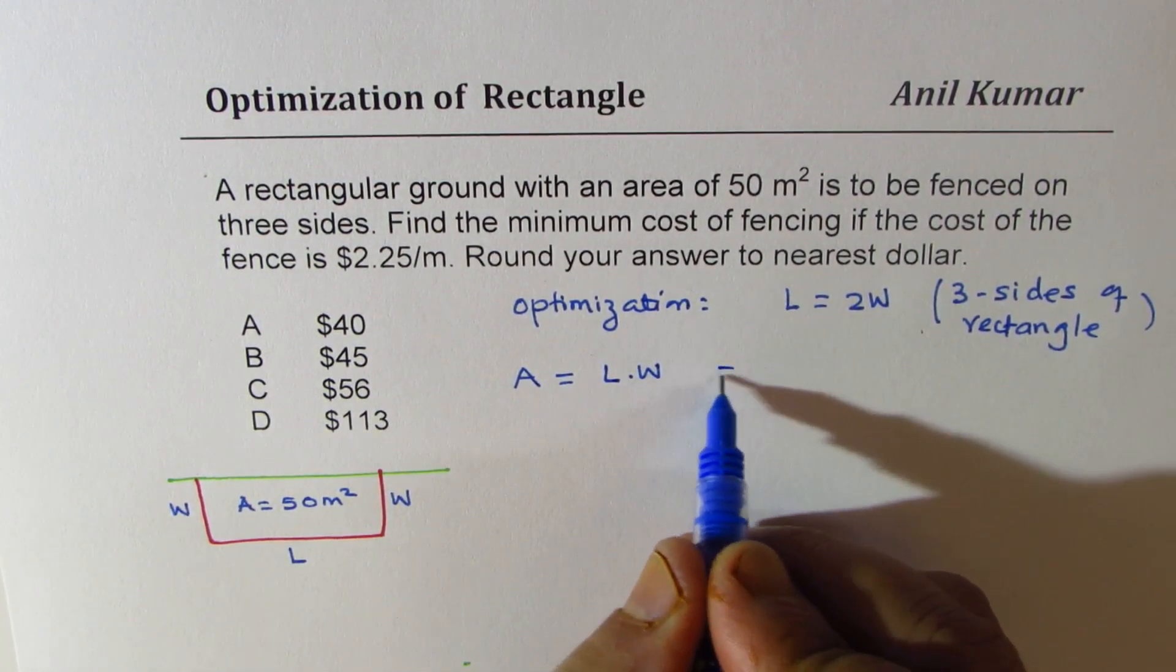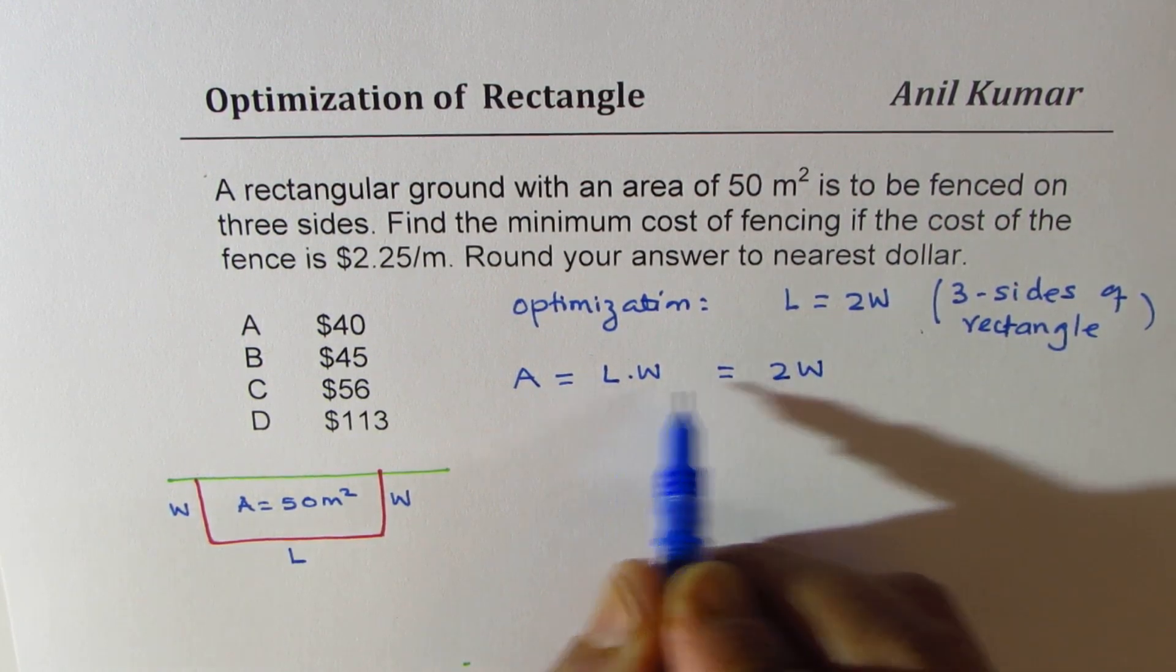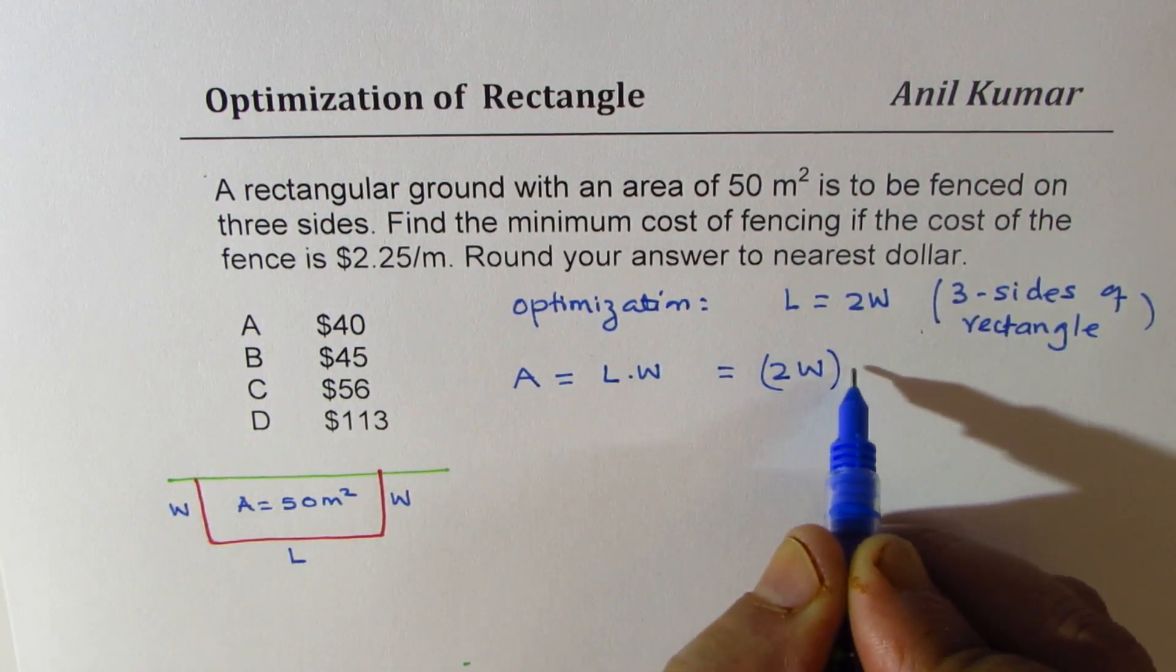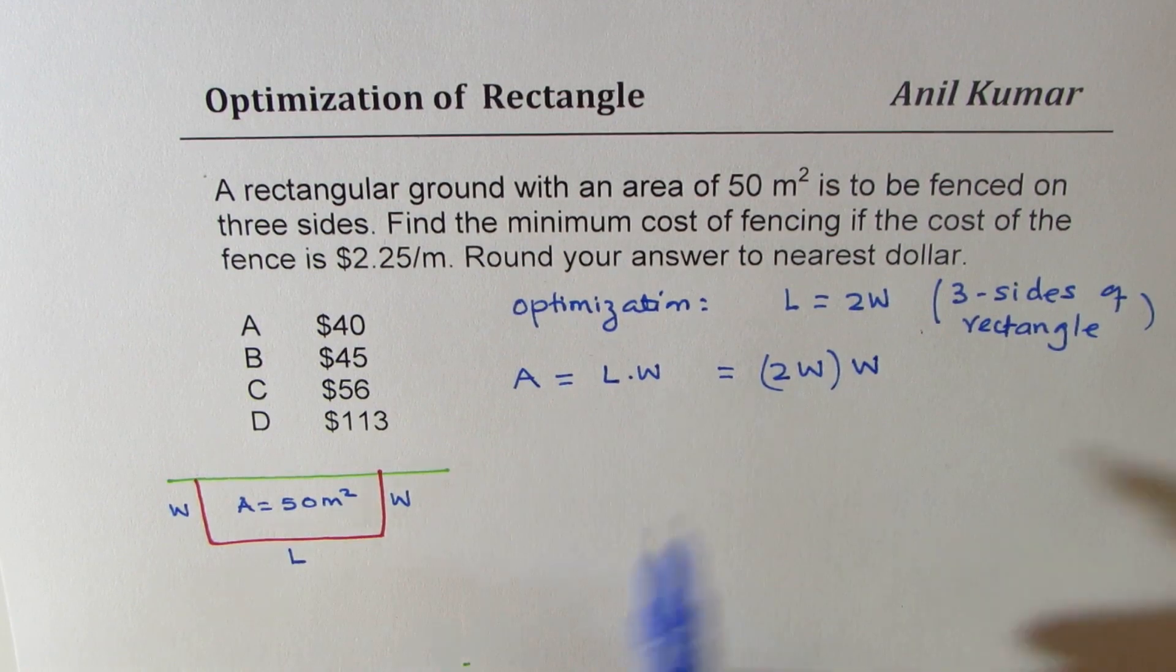If I substitute instead of length, two times width, then what I get is two times width times width is the area.